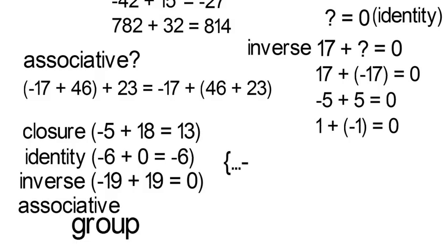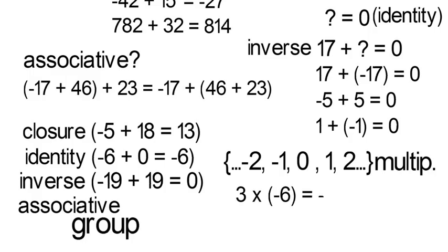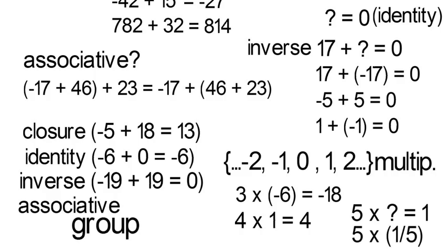So now you can answer, are the integers a group under multiplication? Do they obey everything you see on the left? They are closed, all integers multiplied get another. There is an identity, which is one, because one times any integer gives you that same value. But there's no inverse. If you take five, you can't multiply it by any integer to get one, our identity element. You need to multiply by one fifth, which is not an integer and not in our set. So the integers are not a group under multiplication.